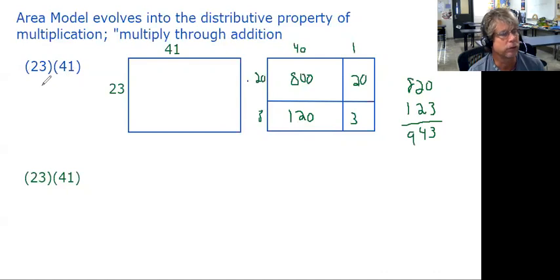So 23 times 41 would be 943, which is the same thing as the area of this rectangle. The area of the rectangle would also be 943 because remember area is determined by multiplication. So those are interesting thought processes as we move forward.